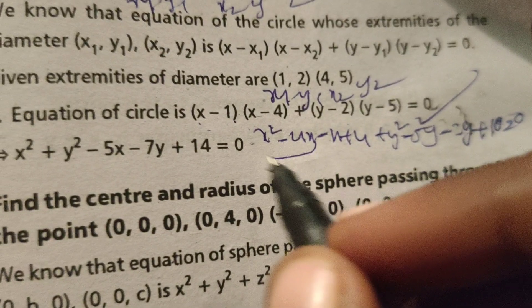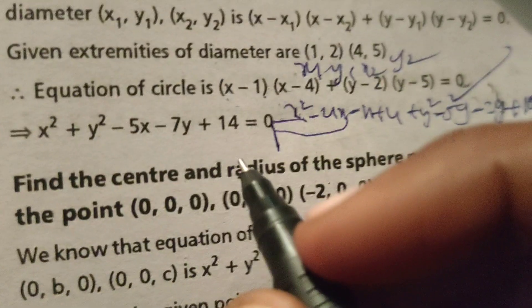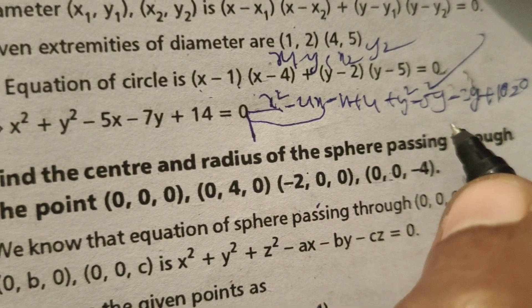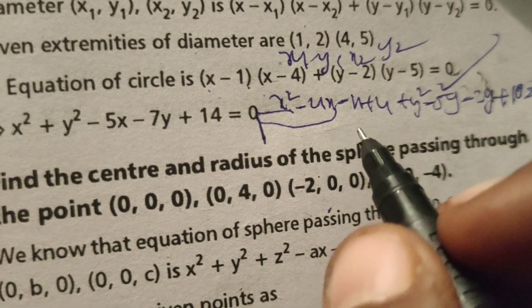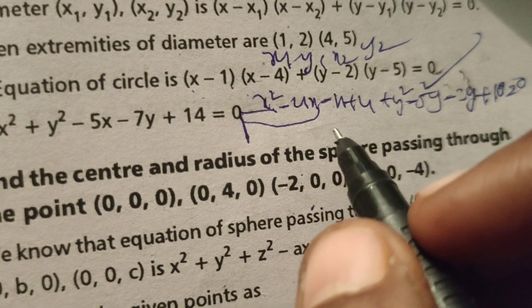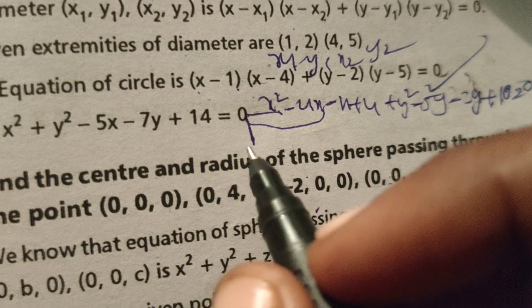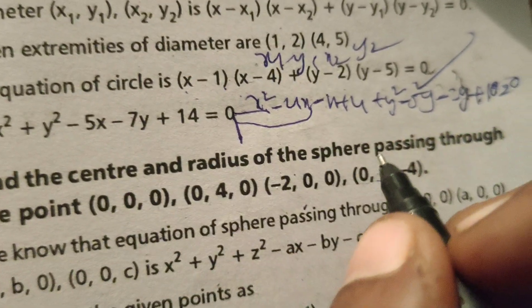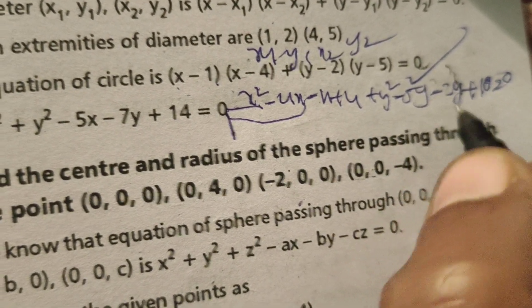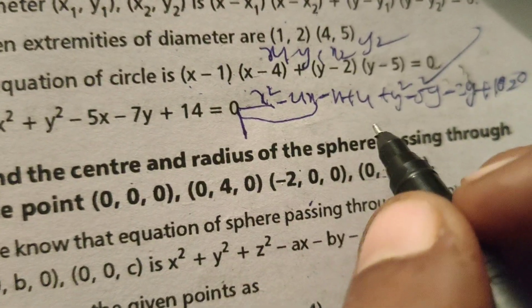After simplification, we will get x² + y² - 5x - 7y + 14 = 0.